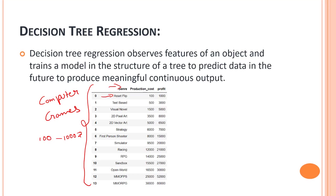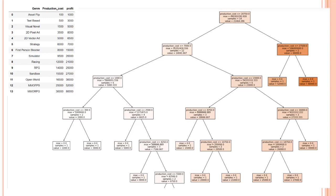For this dataset we will be creating a decision tree, which we can also visualize. This is how the decision tree looks: we have a root node at the top, then decision nodes, and leaf nodes at the end. Each node also shows the RMSE value and the number of samples supporting that node. The root node has a total of 14 samples, which is the complete length of the dataset.